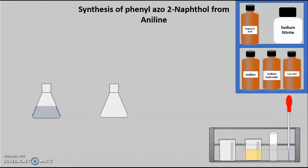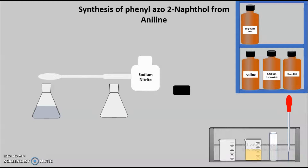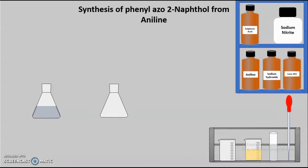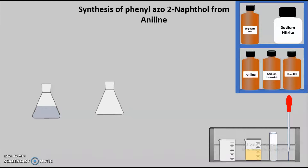For the second step, we have to prepare another solution — the solution of sodium nitrite in water. Here you can see we have taken sodium nitrite; with the help of a spatula, we are measuring 2 grams of sodium nitrite on the weighing balance and adding the required quantity to another container. Then, 10 ml of water is added to the sodium nitrite. In this way, we have prepared the second solution — sodium nitrite in water.